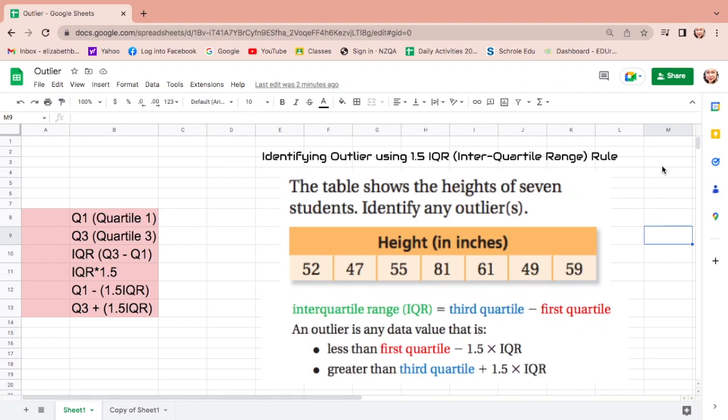In this video, I will show you how to identify outliers using a 1.5 inter-quartile range rule.